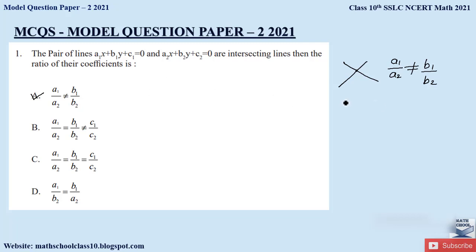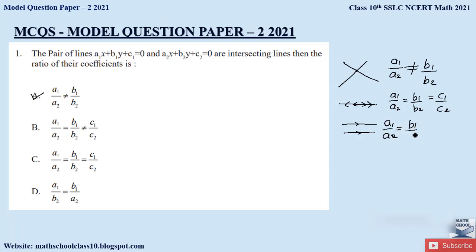Likewise, they can ask for coincident lines — lines which are overlapping — and parallel lines. When lines are coincident, the ratio of coefficients is A1/A2 = B1/B2 = C1/C2. When lines are parallel, A1/A2 = B1/B2 ≠ C1/C2. These are the three conditions, and any one can be asked in your examination, so make a note of all three.